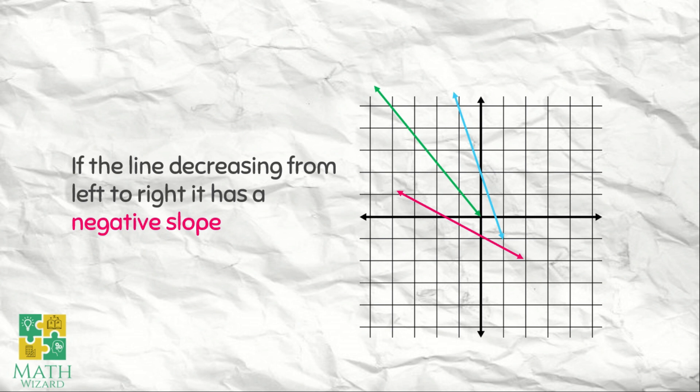the slope of the green one is negative, for the blue one negative slope, for the pink one negative slope. Then bakit? The line is decreasing from left to right. Like that one.